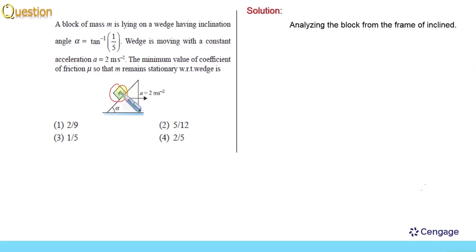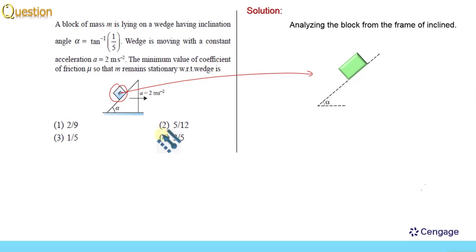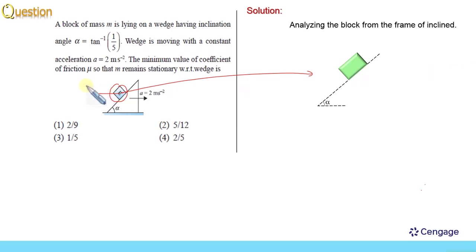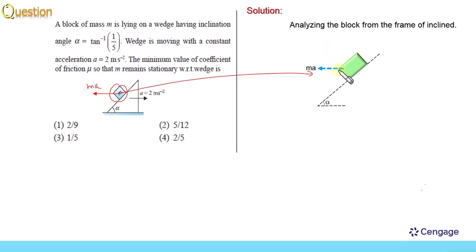Let us make the free body diagram of the block. As we are considering the block from a non-inertial frame of reference, we need to consider the pseudo force. We know the pseudo force is opposite to the acceleration of the frame of reference. This is the direction of the pseudo force, and its magnitude should be equal to mass multiplied by acceleration. It will be better to analyze the forces parallel to the inclined surface and perpendicular to the inclined surface.